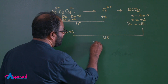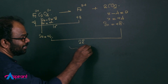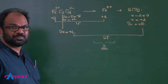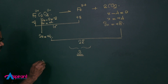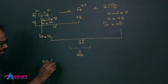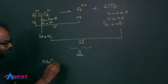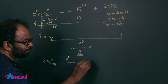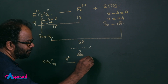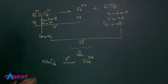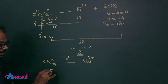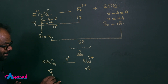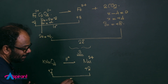KMnO₄ in acidic medium is converted into Mn²⁺. The manganese oxidation number changes from +7 to +2, giving a change in oxidation number of 5.